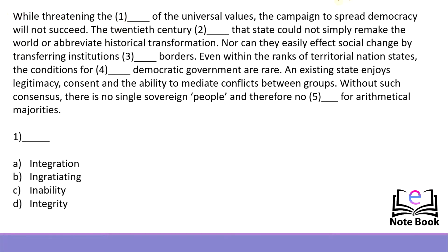The first sentence reads: 'While threatening the blank of the universal values, the campaign to spread democracy will not succeed.' Looking at the options, we can remove 'ingratiating' because it means to please or flatter somebody — that's not needed here. What we need is a synonym of moral or ethics. Between 'integration' and 'integrity': integration means the process of making full or complete, while integrity means moral or ethical values. So the first blank is filled with option D — integrity.